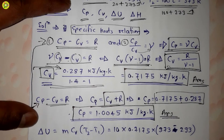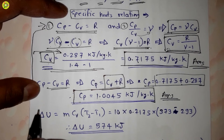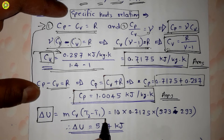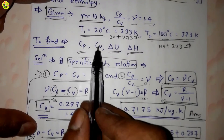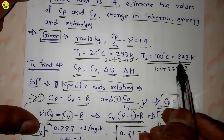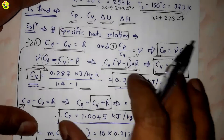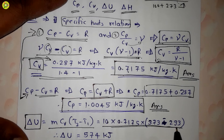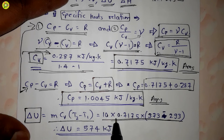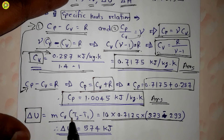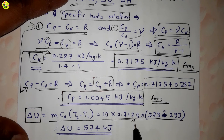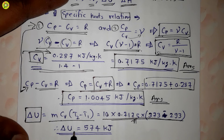Now we calculate the change in internal energy, delta U. Its formula is m·cv·(T2 minus T1). We have m = 10 kg, cv = 0.7175 kJ/kg·K, T2 = 373 K, and T1 = 293 K. Substituting: delta U = 10 × 0.7175 × (373 minus 293). After solving, delta U equals 574 kJ.